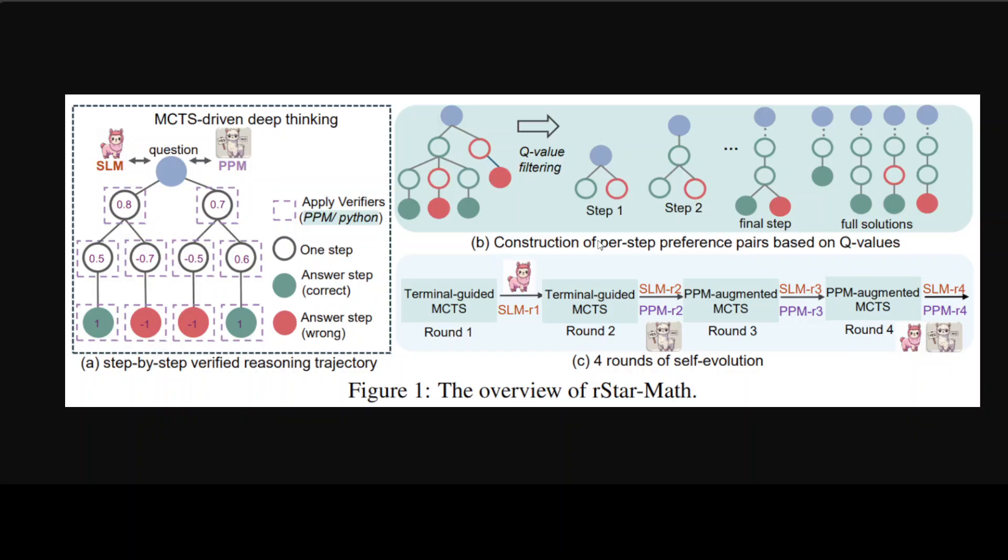It uses two SLMs and MCTS to think deeply and come up with solutions. As you can see on the screen, this is in action. From the left you can see they have this Monte Carlo Tree Search. MCTS is a decision-making algorithm that helps this R-Star-Math model to explore different possible solutions to a problem.